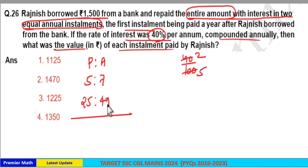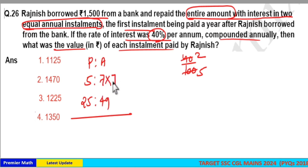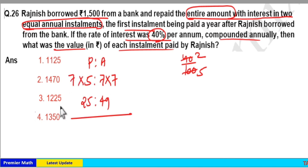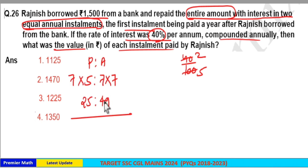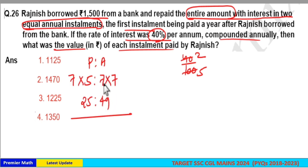In the first year the amount is 7 parts and in the second year it is 49 parts. To equalize the amounts, we multiply the first year amount by 7, giving 49 parts. To balance the ratio, we also multiply the first year principal of 5 by 7, giving 35. Now both years have equal amounts of 49 parts each.